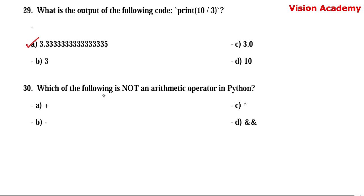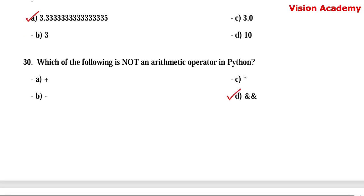Question number 30. Which of the following is not an arithmetic operator in Python? Option A: plus. Option B: minus. Option C: multiplication. Option D: double ampersand (&&). Option D is the right answer because && is a logical operator, not an arithmetic operator.